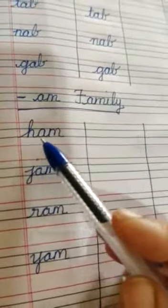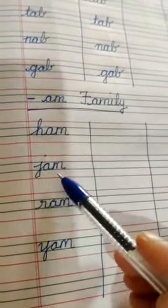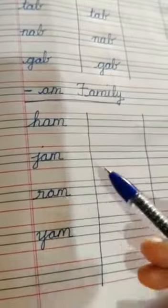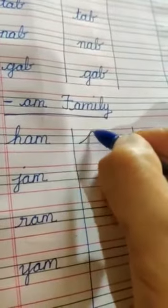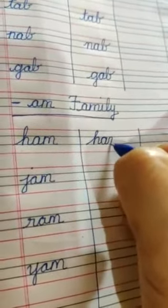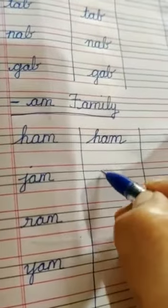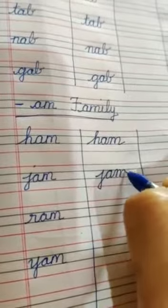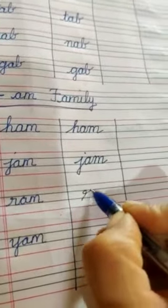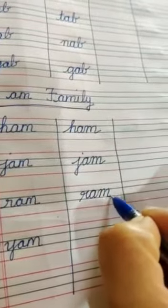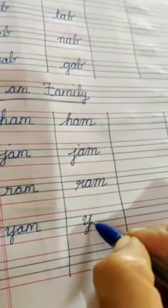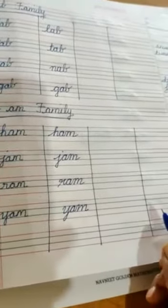Let us go to the next family — the AM family. H-A-M ham, J-A-M jam, R-A-M ram, Y-A-M yam. Shall we learn to write it? H-A-M ham, J-A-M jam, R-A-M ram, Y-A-M yam. Learn to write beautifully in senior KG and then you will always write neatly, children. Wonderful job all of you are doing.